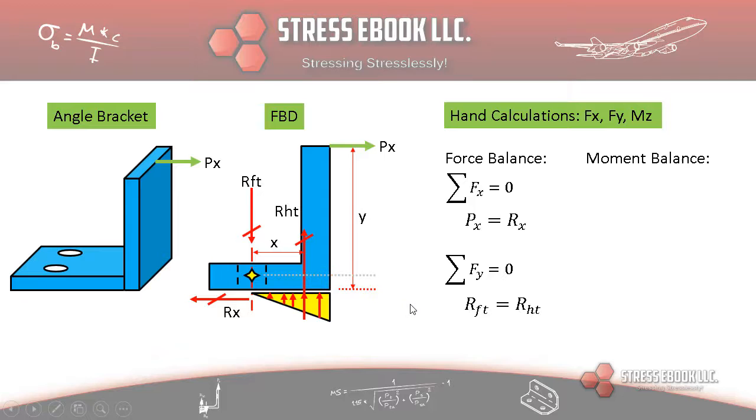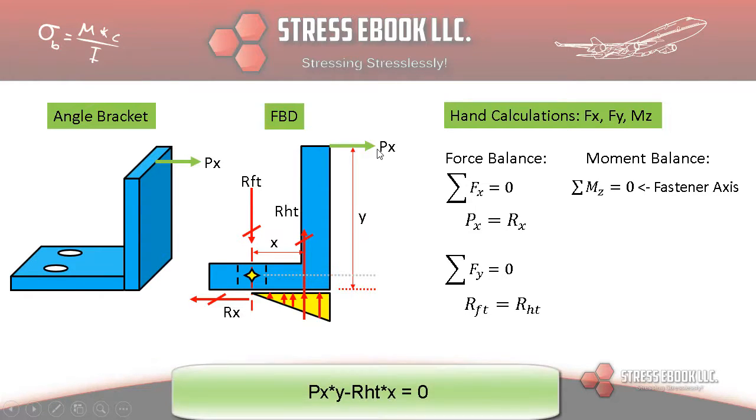The next thing we're going to get into is the moment balance. So what we have here is MZ, it's moment about an axis coming out of this center point as a virtual fastener center point. So we're going to take moments about this point. We have PX. Now you might be asking, why do we go all the way to the bottom here, why not just stop over here?